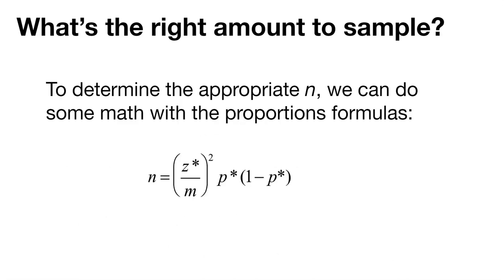So to determine the appropriate value for n, how many things we should sample, we can find the proportions. Then n is going to equal z star divided by our margin of error, squared, multiplied by p times 1 minus p. We can use this formula to calculate the number of samples to collect.